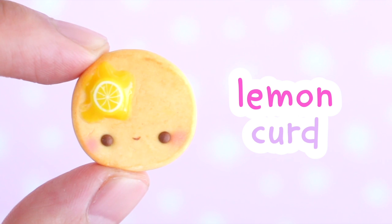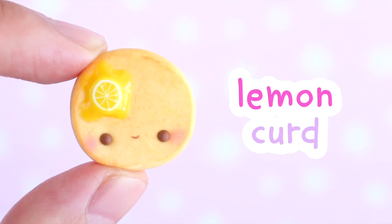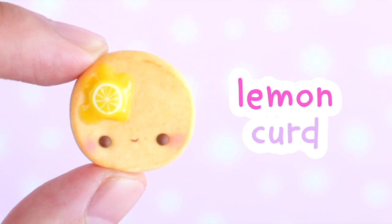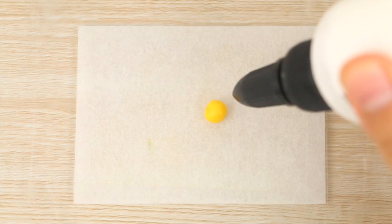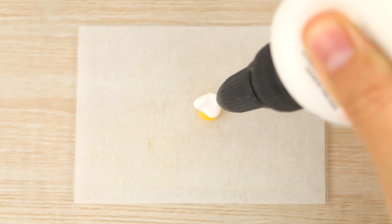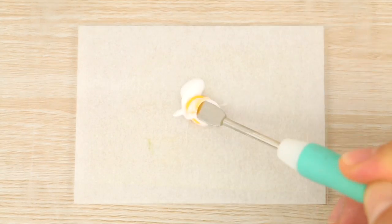The first one that I'm showing how to make is a lemon curd. So for this one I'm starting with a small ball of yellow polymer clay and squeezing out some translucent liquid Sculpey. And then I mix the whole thing up.